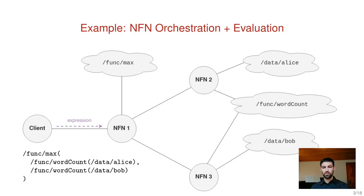We see an example on this slide. On the left side is a client, then in the middle we have three NFN nodes, and also the two documents and the two named functions available in our network. The client on the left is interested in the result of the expression we saw in the previous slide, so the expression is encoded into an NDN name, put into an interest, and sent towards the network.